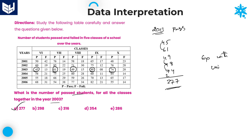The simplest shortcut method is to go with the units place digit. If the units digit is the same for any of the options, then only you need to do the full calculation. Otherwise, directly check the units digit. This is a time-saving tip for any competitive examinations.